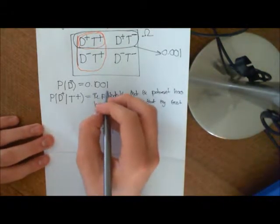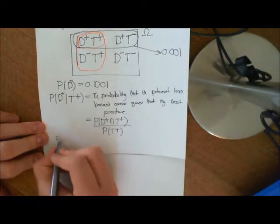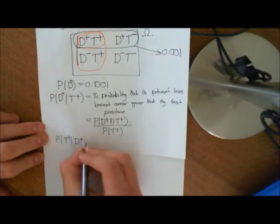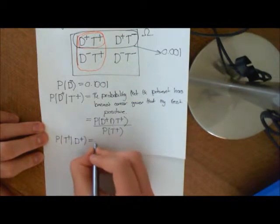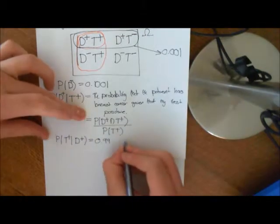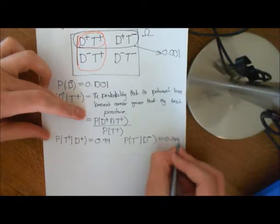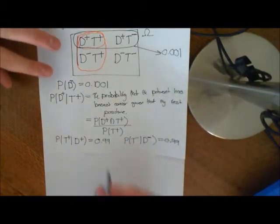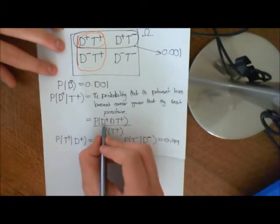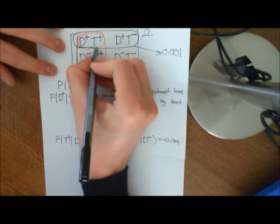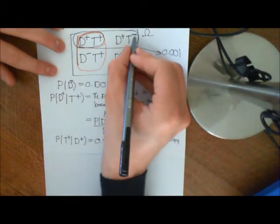So let's write down more of the stuff we know. We know that the probability that, given that you have the disease, you get a positive test — the probability of getting a positive test given that you are disease positive — is 0.99. And we know that the probability of getting a negative test result given that you don't have the disease is 0.99. What we want to work out first is the probability that you have the disease and that you test positive — and we know the probability that you have the disease.